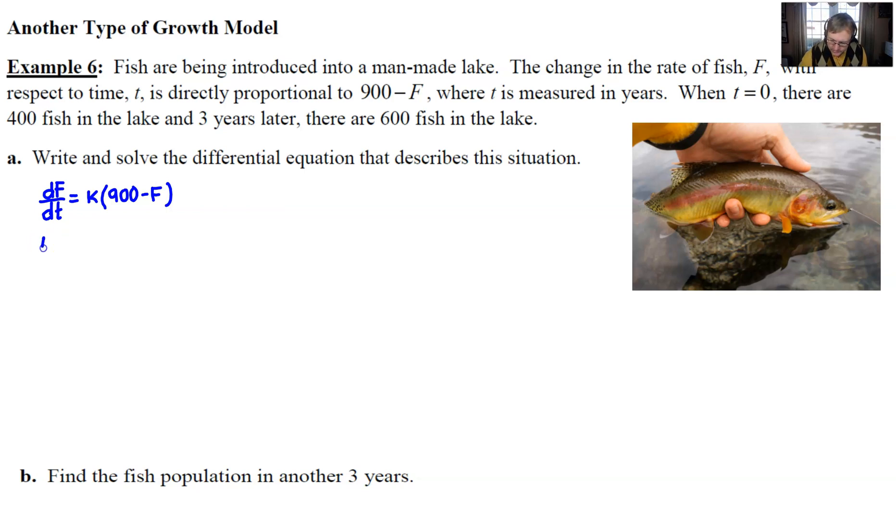Next up, we're going to divide 900 minus F over to the left. We're going to keep our dF over on the left, and we're going to multiply our dt over to the right. So really, it's the same process in solving. It's just that we have some unusual variables, F and t.